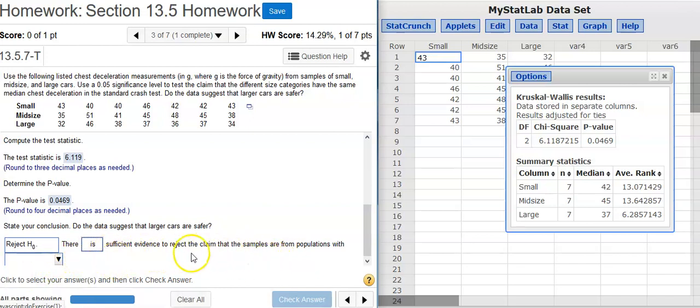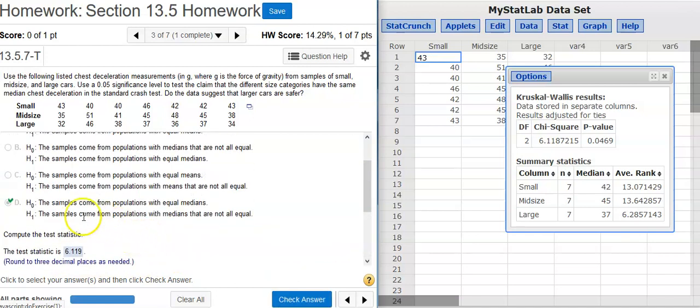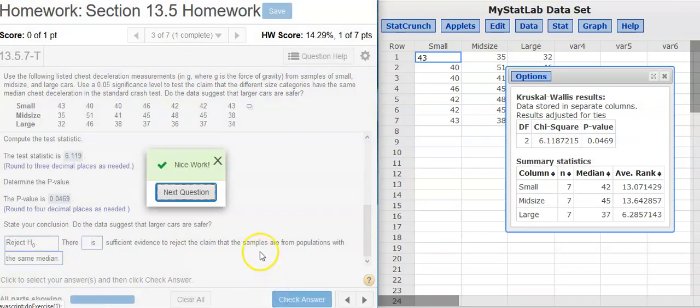So we're going to reject the null hypothesis, and we're going to say that there is sufficient evidence. And what are we having sufficient evidence for? Rejecting the claim that the samples are from populations with the same median. Because that's what this says right up here. We're rejecting the null hypothesis. It says they all have the same median value. Nice work!